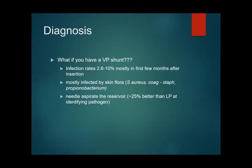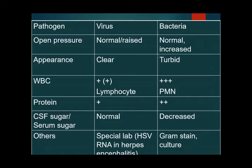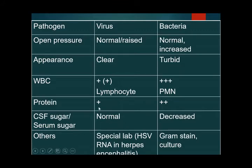Comparing CSF in viral versus bacterial CNS infections: opening pressure can be normal or raised in viral infections, and is usually raised in bacterial meningitis. CSF appearance is turbid in bacterial meningitis. WBC shows polymorphonuclear leucocytosis in bacterial meningitis and lymphocytic dominance in viral infections. Proteins are raised in both but more so in bacterial. CSF glucose is normal in most viral infections, though some viruses like herpes encephalitis can show low glucose. In bacterial meningitis, glucose is definitively low.